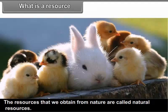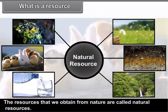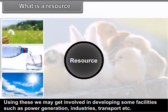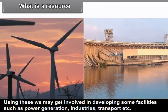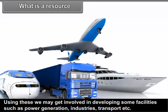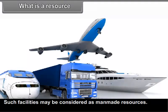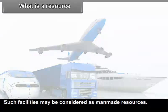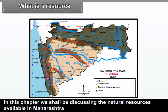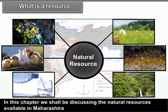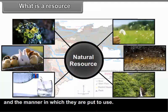Similarly, the biogas that we use as an energy resource existed since long but it became a resource only when the technology to use it was developed. The resources that we obtain from nature are called natural resources. Using these, we may get involved in developing some facilities such as power generation, industries, transport, etc. Such facilities may be considered as man-made resources. The development of a region basically depends on the availability of resources and its proper and judicious utilization. In this chapter, we shall be discussing the natural resources available in Maharashtra and the manner in which they are put to use.